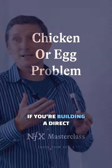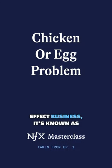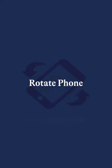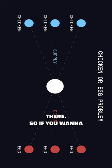is called the chicken or egg problem. If you're building a direct network effect business, it's known as a cold start problem. But the basic idea is that you can't get anyone to join your network unless there's already somebody there.